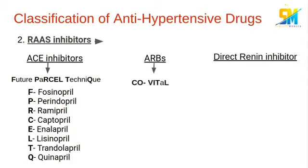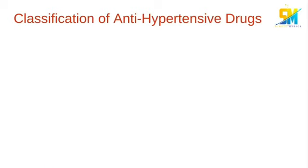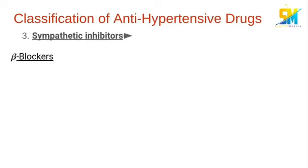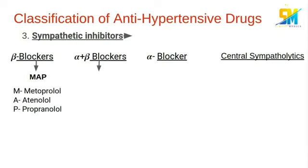We can remember the ARBs by the mnemonic 'COVITAL'. We can remember the beta blockers by the mnemonic 'MAP': metoprolol, atenolol, and propranolol.